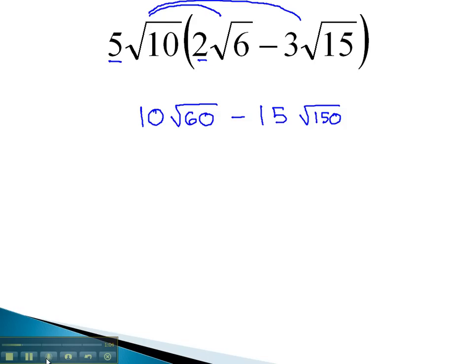Before we're done, we want to make sure our radicals are completely simplified. Let's find the prime factorization of 60: divide by 2 to get 30, by 2 to get 15, by 3 to get 5, and by 5 to get 1. We now have 10 times the square root of 2 squared times 3 times 5.